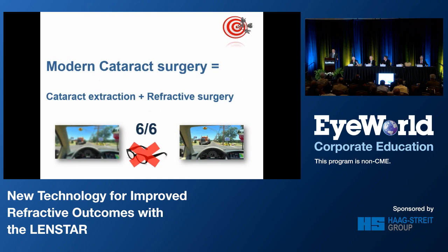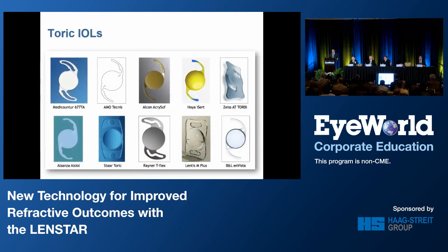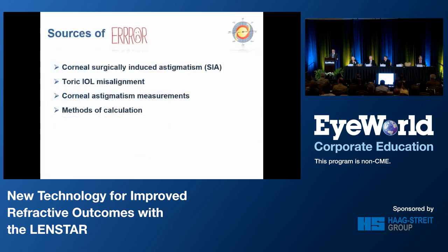Modern cataract surgery has become a combined rehabilitative and refractive procedure, and TORIC IOLs have a major role in this new era, becoming the standard of care for patients with pre-existing corneal astigmatism who undergo cataract surgery. However, the results following TORIC IOL implantations are not always quite predictable. Surgically induced astigmatism, TORIC IOL misalignment, corneal astigmatism measurements, and the methods of calculation are all factors that might contribute to unexpected residual astigmatism.